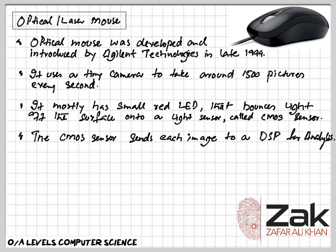DSPs are widely used in audio signal processing, telecommunication, digital image processing, radar, sonar, and speech recognition systems, as well as in consumer electronic devices such as mobile phones, disc drives, and high-definition TVs. The goal of DSP is usually to measure, filter, or compress continuous real-world analog signals — wherever data is being collected from the environment, DSPs are used.